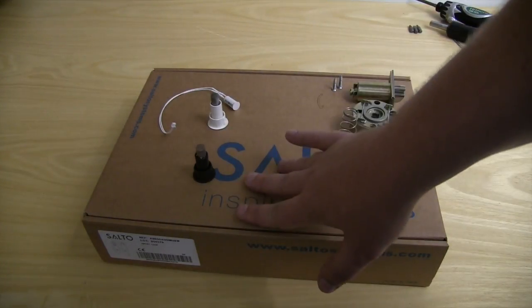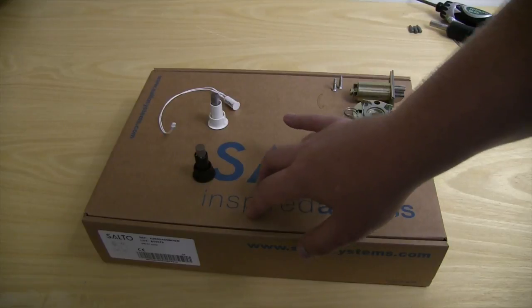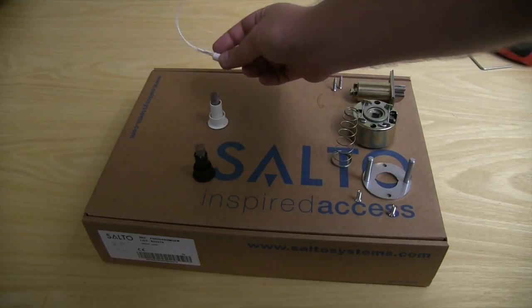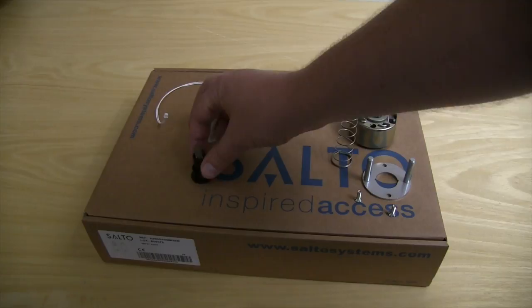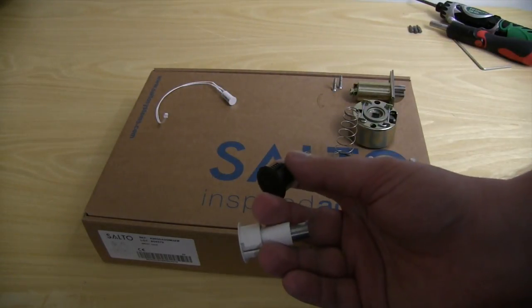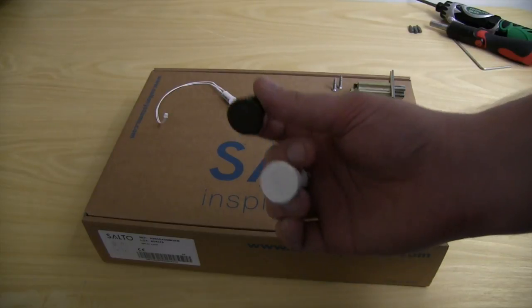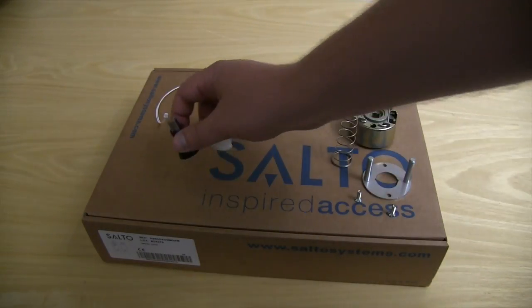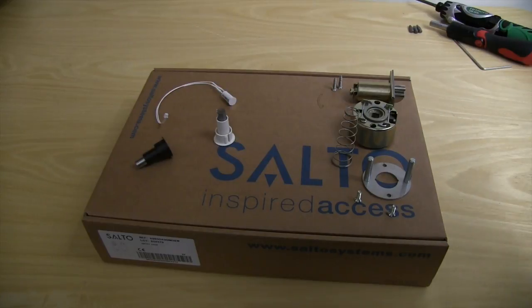If you are doing a mortise lock, all you will need is what is in the box: a door sensor and the magnets. A magnet can be either brown or white. You need to use the larger magnet for a metal frame, but you can use the smaller ones for a wooden frame.